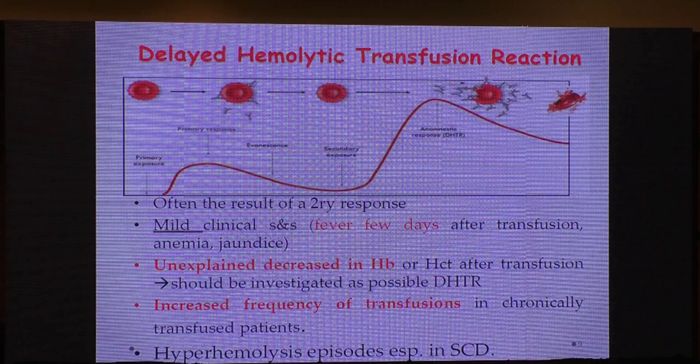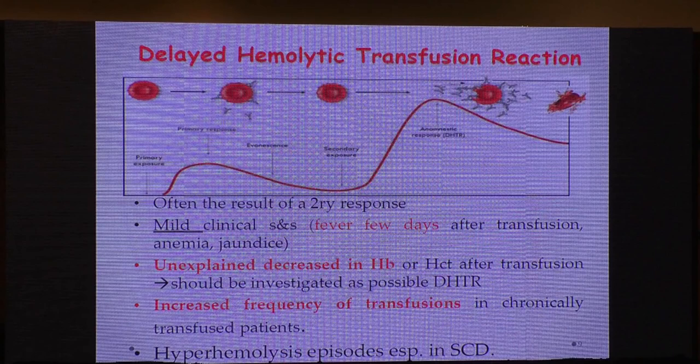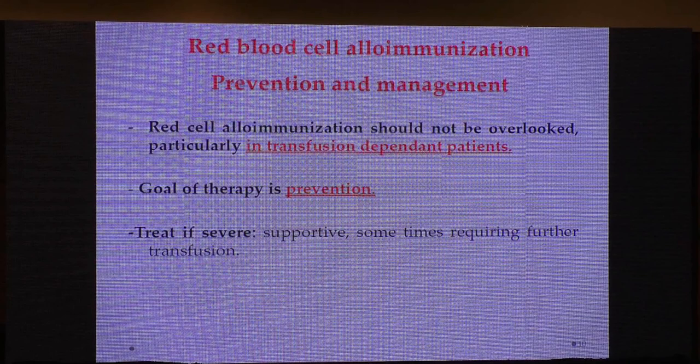There can also be hemolytic disease of the newborn. In delayed hemolytic transfusion reaction, we can find mild attacks with fever a few days after transfusion — the mother notices the child has a fever with no explanation, and there is an unexplained decrease in hemoglobin. This leads to increased frequency of transfusions. A thalassemia patient who was being transfused every month and a half may become every month, then every three weeks, then every two weeks. A major cause is the formation of allo-antibodies, causing delayed reactions and requiring more frequent transfusions.